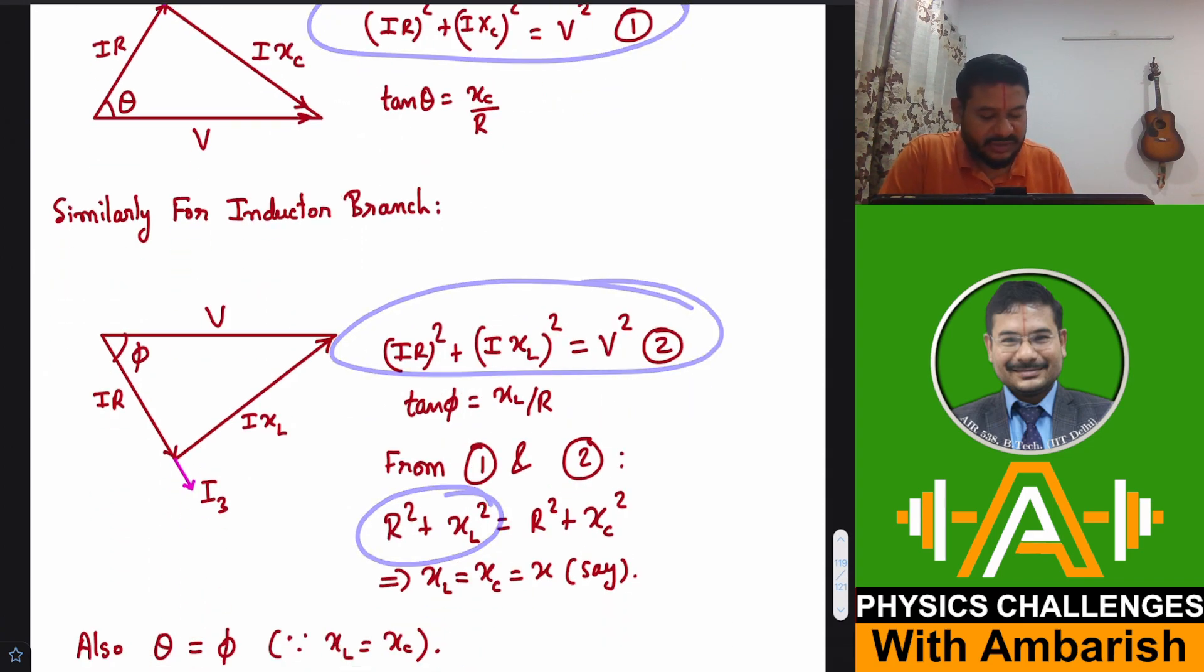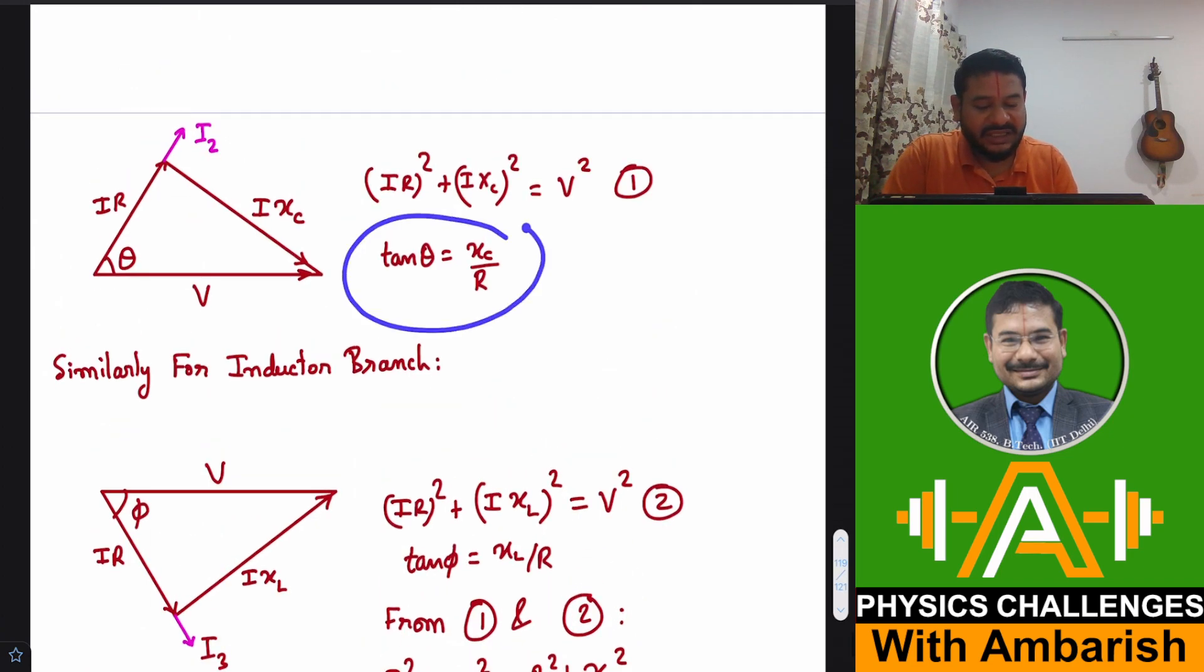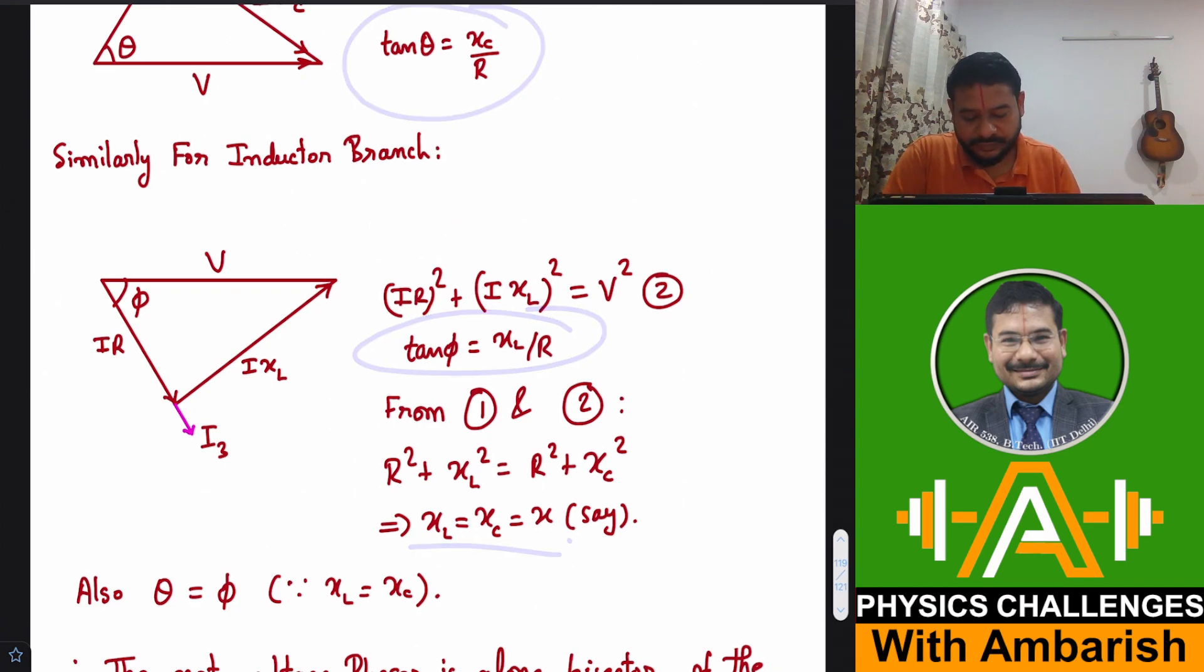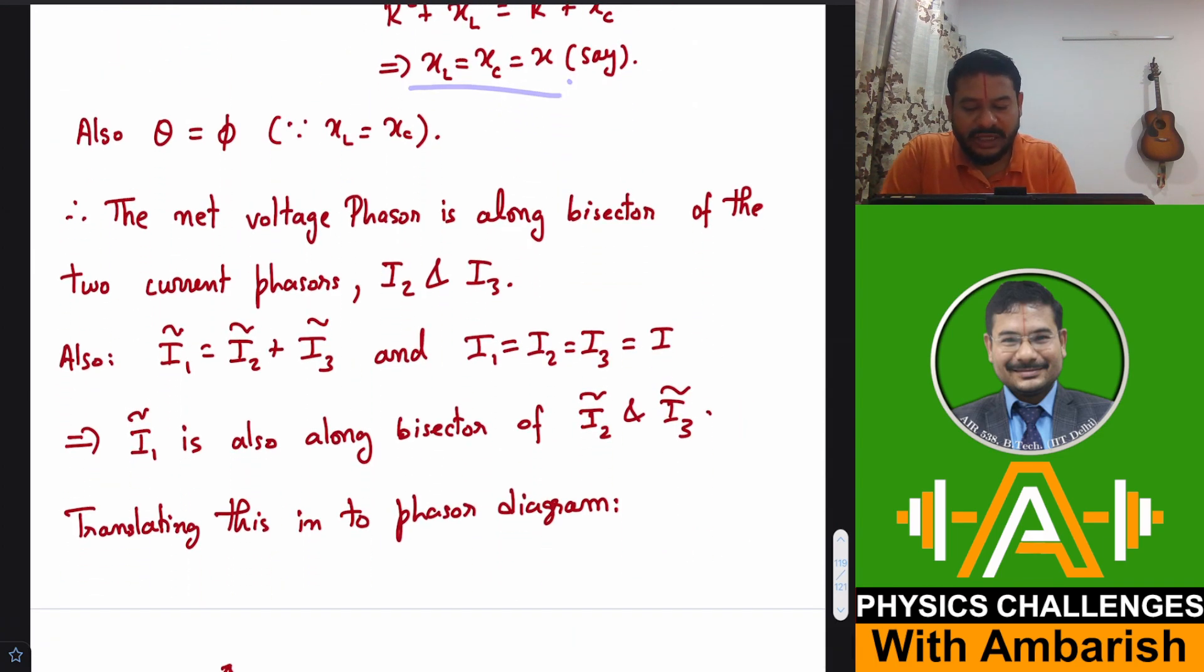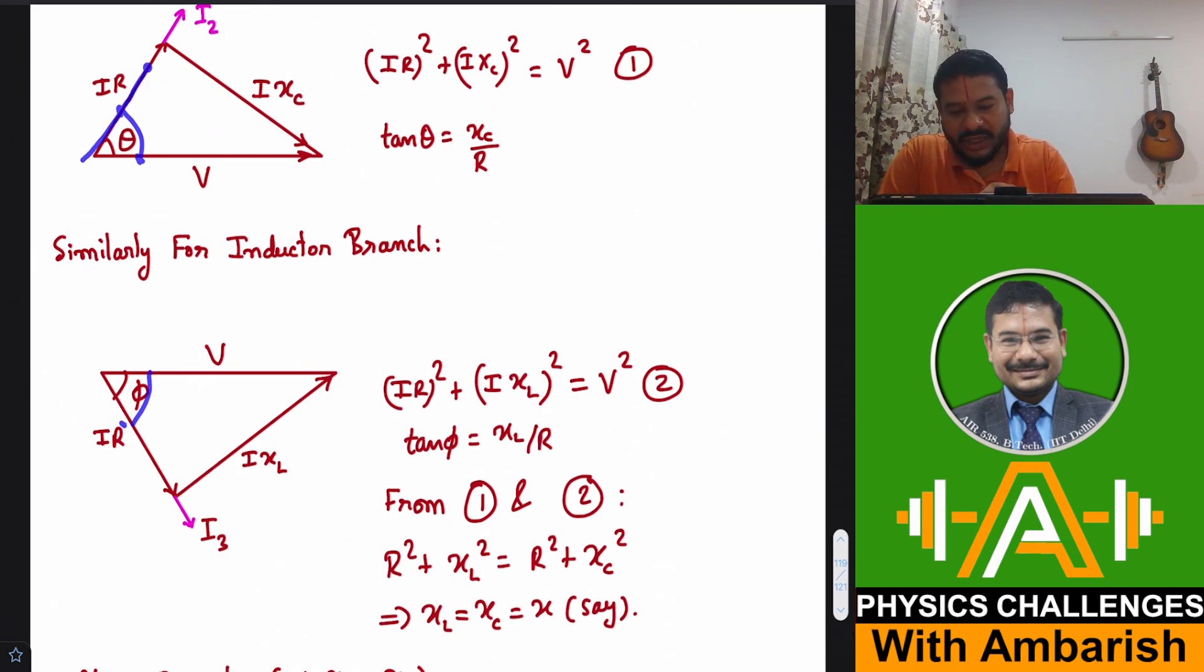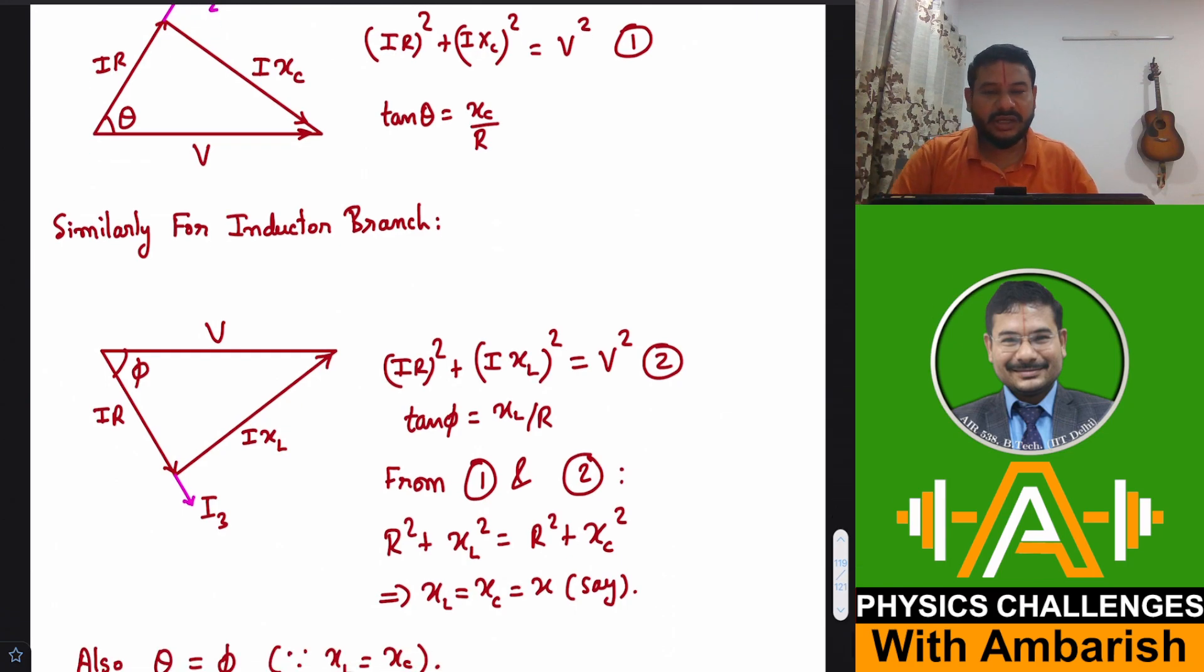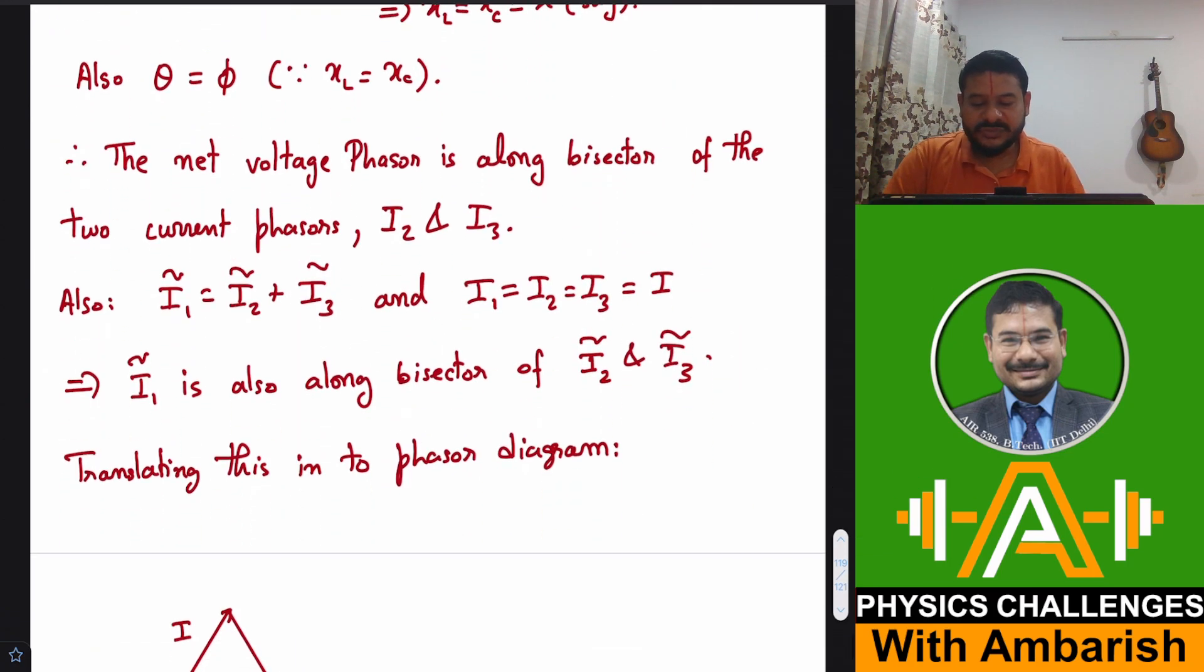And you can see from equation one and equation two that XL and XR are equal. R square plus XL square is equal to R square plus XC square. So XL and XC both are equal to each other. And let's say that's equal to X. Also since XL and XC are equal, you can see that tan theta and tan phi both are equal. So that means what? The net voltage phasor is along the bisector of current phasors I2 and I3. Why? Because this theta and this phi both are equal. So I2 and I3, so V is nothing but at equal angles with respect to both these currents or we can say voltage is along the bisector of I2 and I3, which in turn are equal to I each.